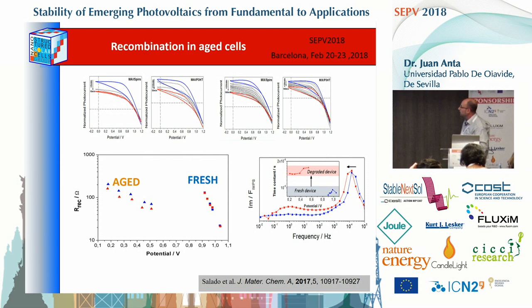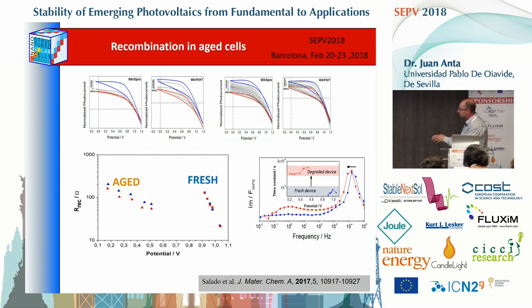We also used impedance spectroscopy to analyze how aging and ambient moisture affect the device. When we degrade devices in humid air, we obtain impedance spectra for both fresh and aged cells. For the fresh cell the recombination resistance is the same under red and blue light, but once the cell is aged or degraded, the recombination resistance becomes smaller, the voltage decreases — recombination is being accelerated — and importantly, differences start to appear between the blue-light and red-light impedance data.